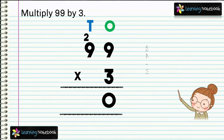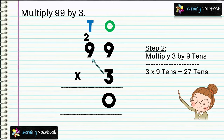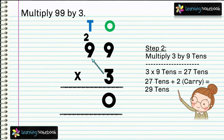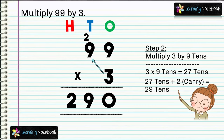In step two, multiply 3 by 9 tens — 3 into 9 tens equals 27 tens. We also have 2 as carry due to regrouping in step one. We add: 27 tens plus 2 carry equals 29 tens. We write 29 in the answer.